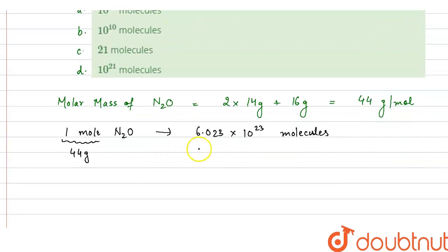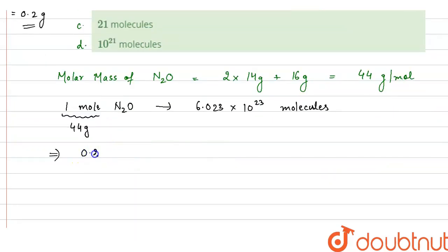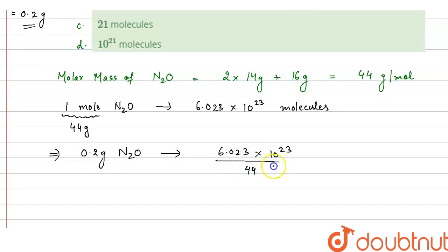From here we can calculate the molecules in 200 milligram. 200 milligram is equal to 200 × 10⁻³ gram, which equals 0.2 gram. So the number of molecules in 0.2 gram N₂O equals (6.023 × 10²³ / 44) × 0.2, which comes out to be 2.73 × 10²¹ molecules.